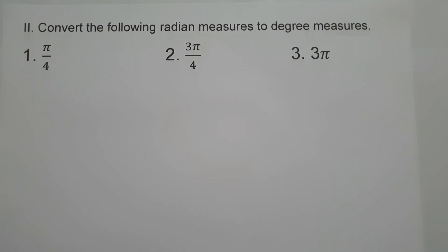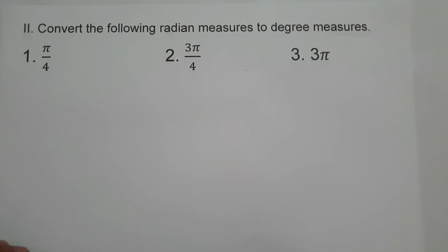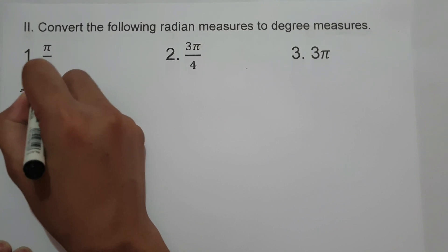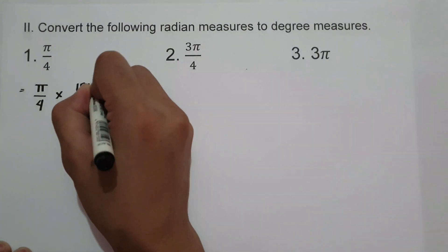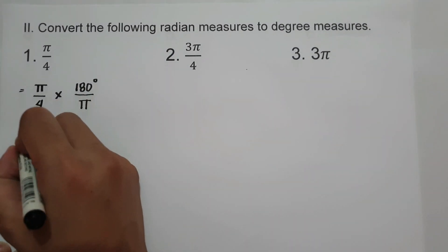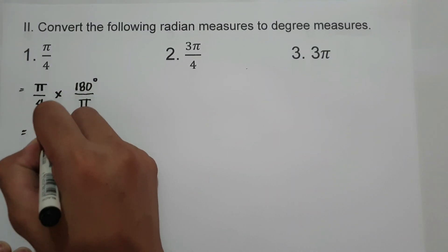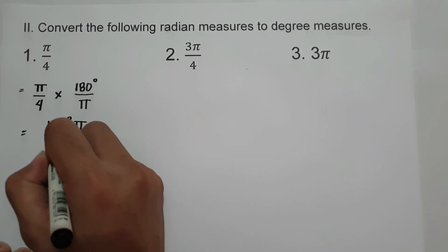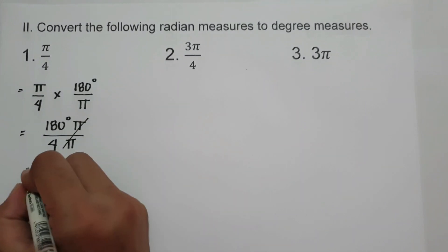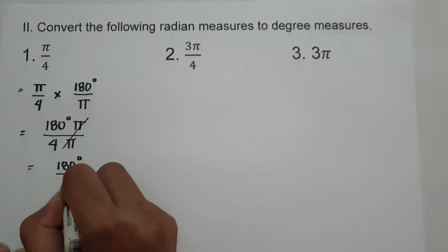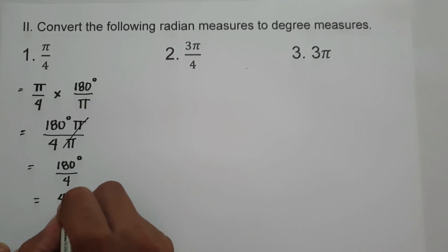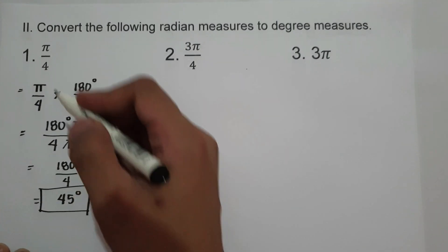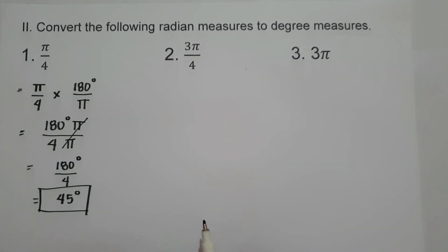On the second set of examples, we are going to convert radians to degrees. To convert radians to degrees, simply multiply the given number of radians by 180 degrees over pi. On example number 1, we have pi over 4. Multiply pi over 4 by 180 degrees over pi, cancel pi, and we have 180 degrees divided by 4, which is 45 degrees. So pi over 4 is 45 degrees.